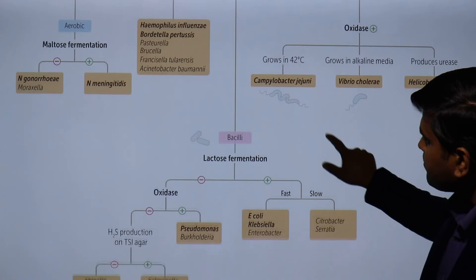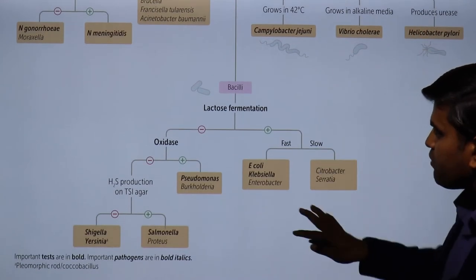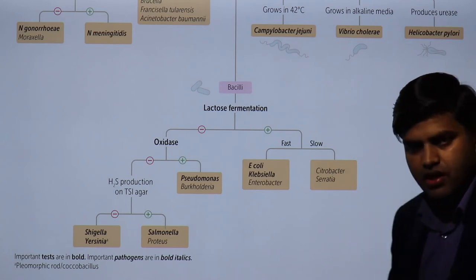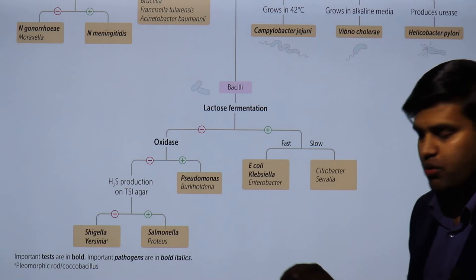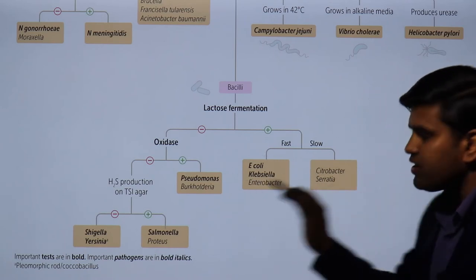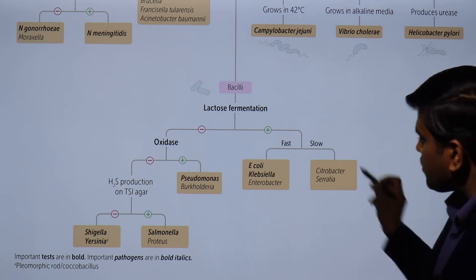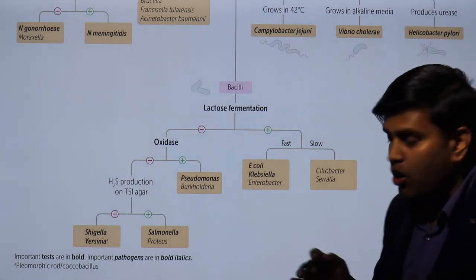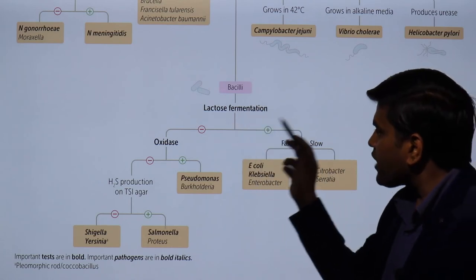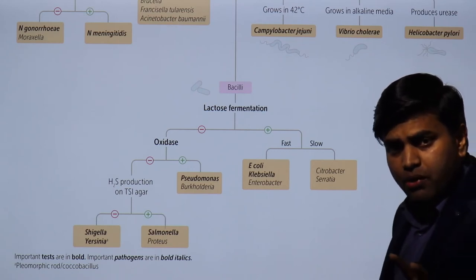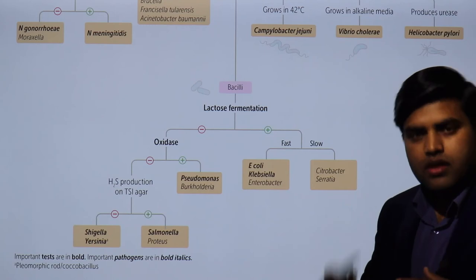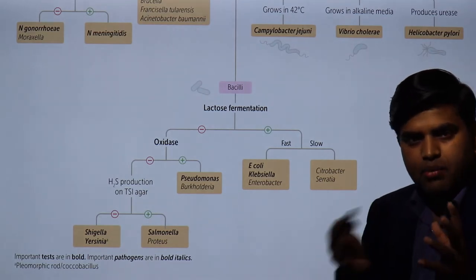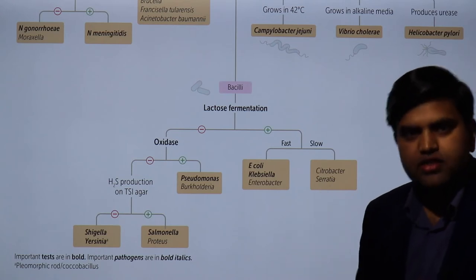Now let's come to the true bacilli. Medically important gram-negative true bacilli include: Salmonella, Proteus, Shigella, Yersinia, Pseudomonas, Burkholderia, E. coli, Klebsiella, Enterobacter, Citrobacter, and Serratia. To differentiate among them, we use the lactose fermentation test on MacConkey agar. Organisms that ferment lactose produce acid, changing the media pH, and the indicator turns pink.